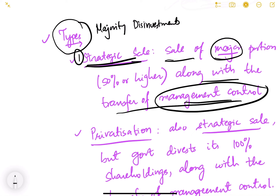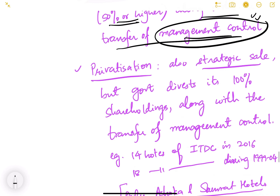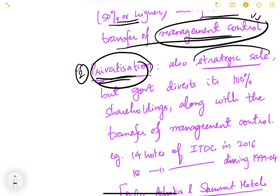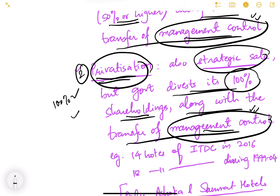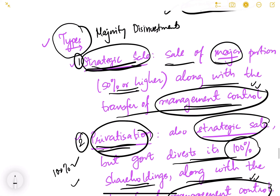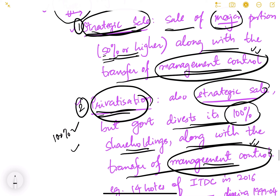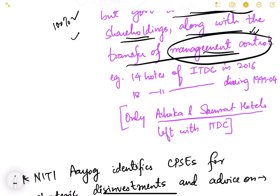What are the types of majority disinvestment? The first is strategic sale — the sale of a major portion (50% or higher) of a government company along with transfer of management control. The second mode is privatization, where the government disinvests 100% of its shareholding along with transfer of management control. In strategic sale, at least 51% is sold; in privatization, 100% is sold.